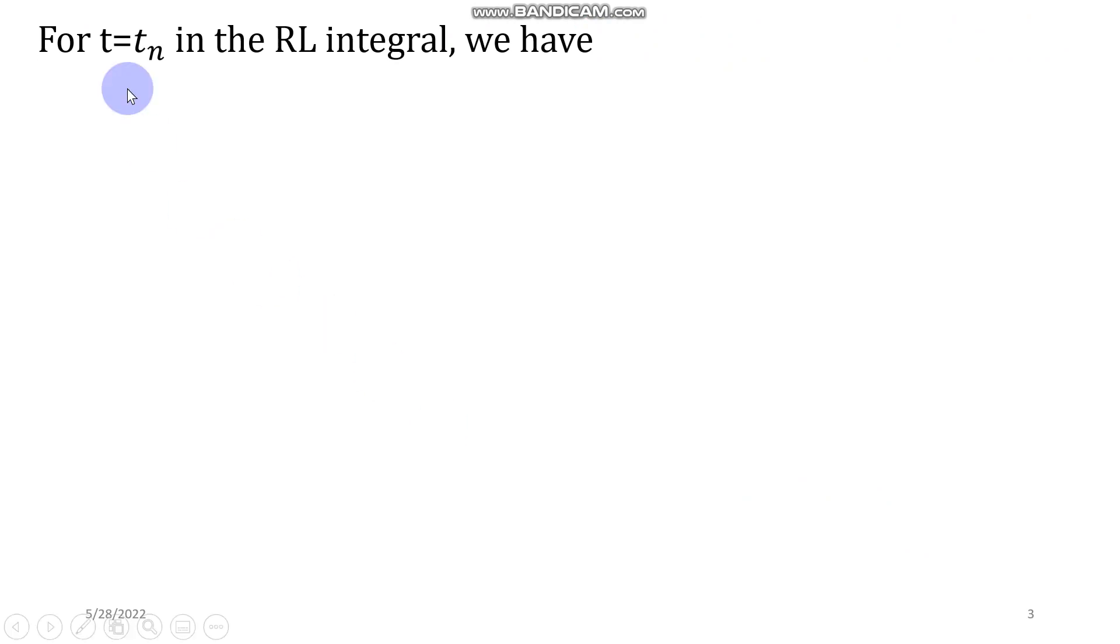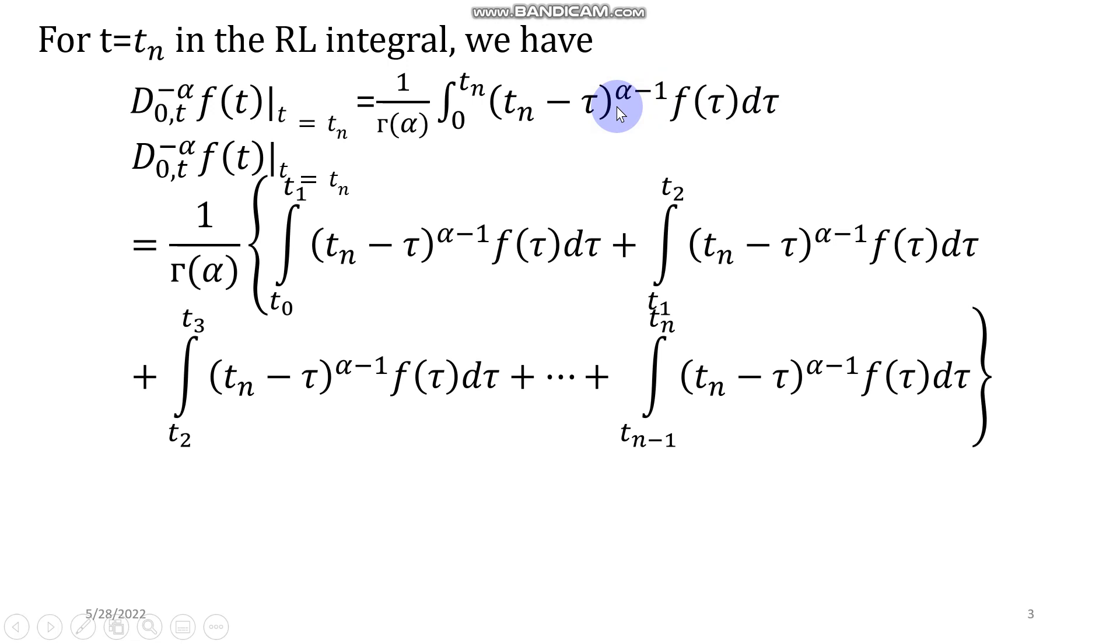For t equal to t_n in RL integral, we have this equation. The integral can be broken into several integrals. I can write the first integral from t_0 to t_1, in this case t_0 will be equal to 0, plus the second integral from t_1 to t_2, and similarly the last integral.